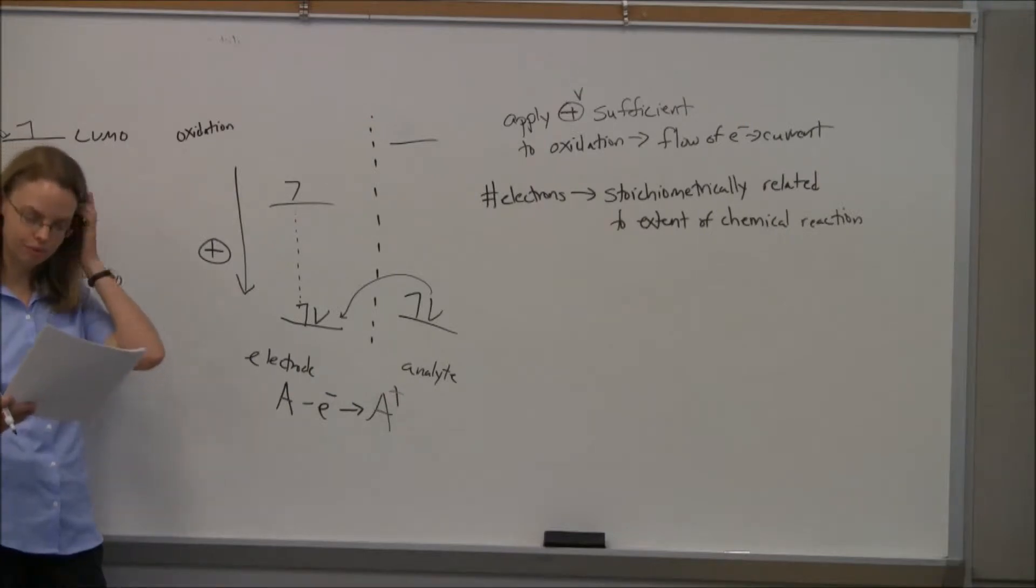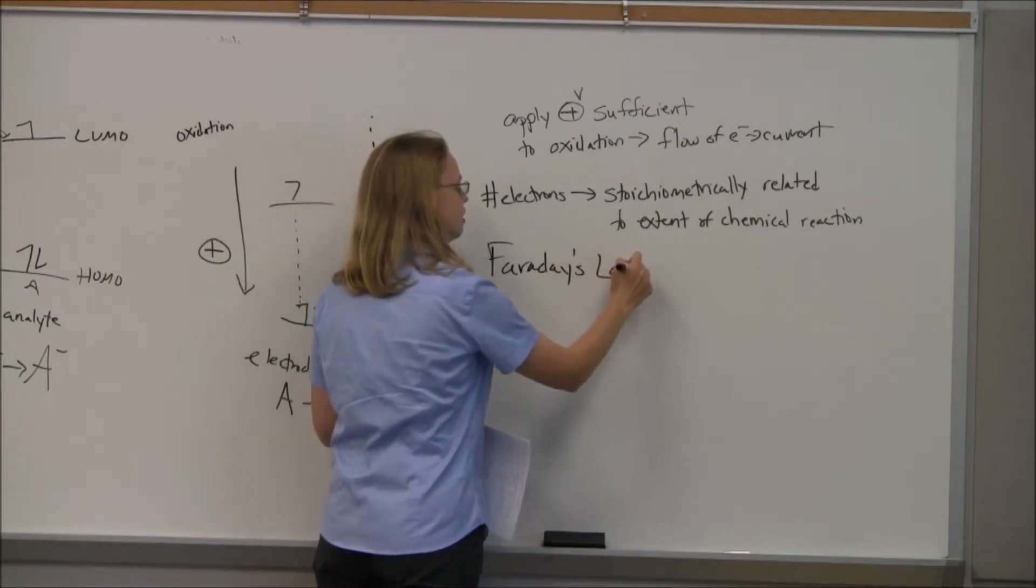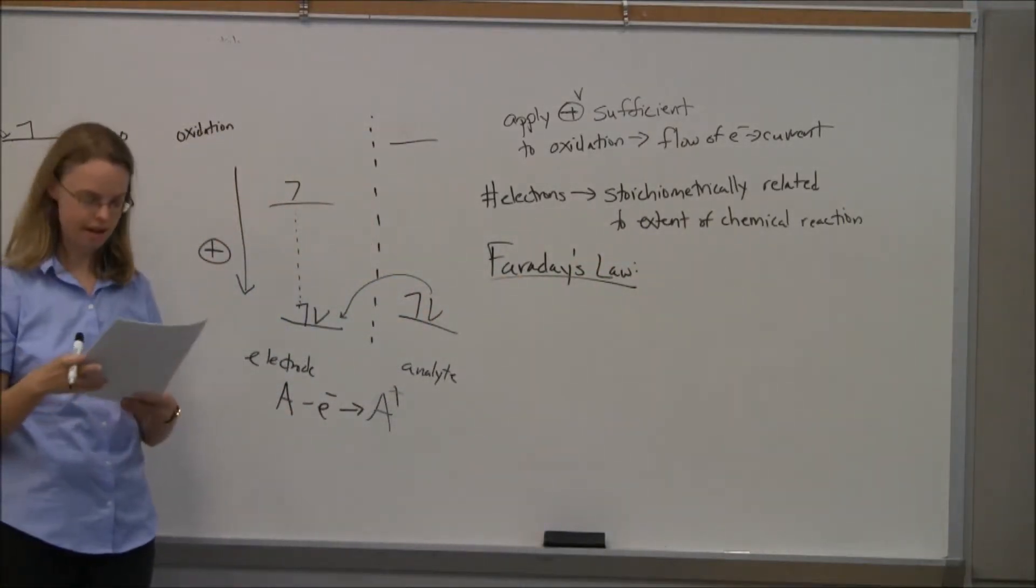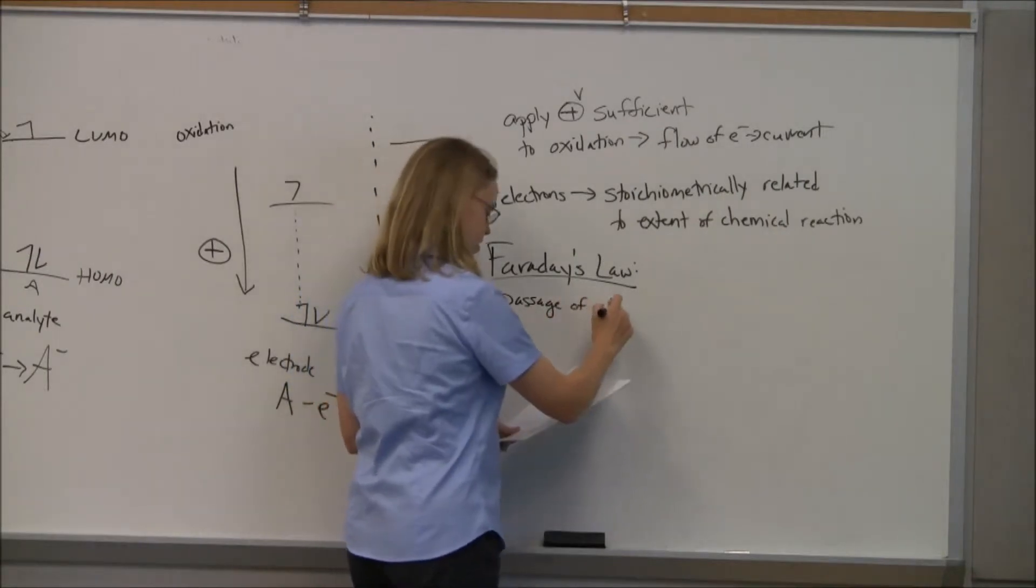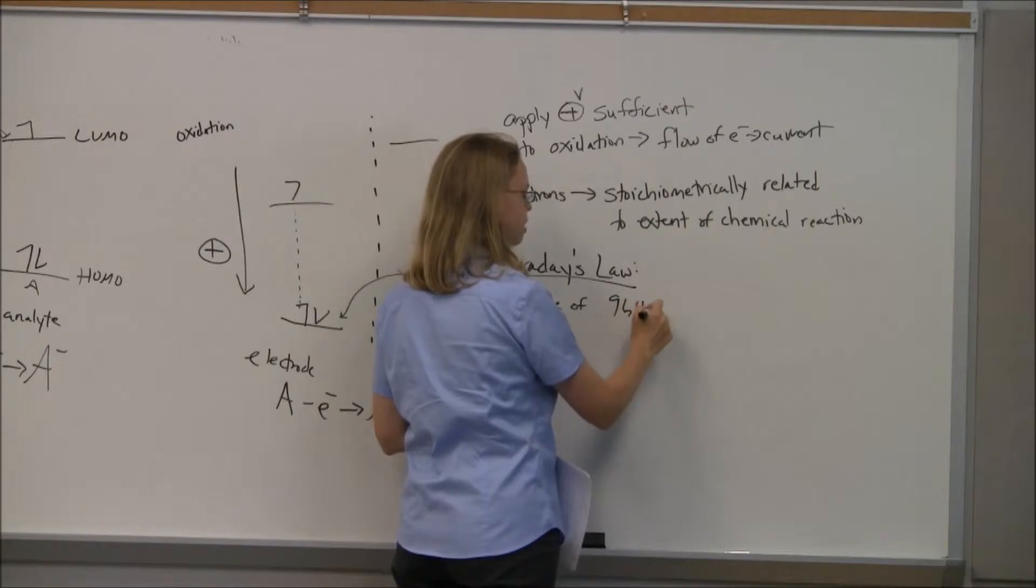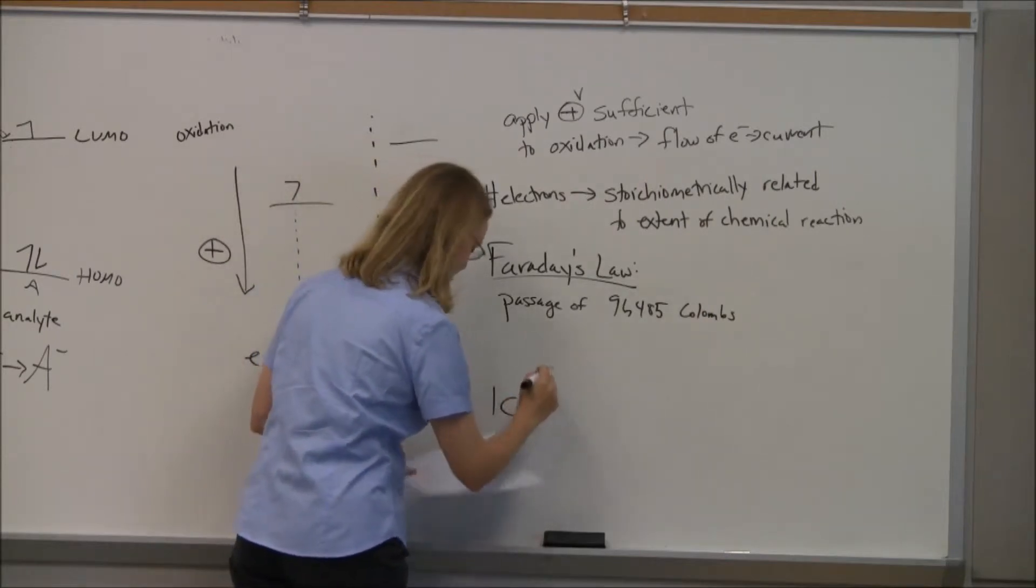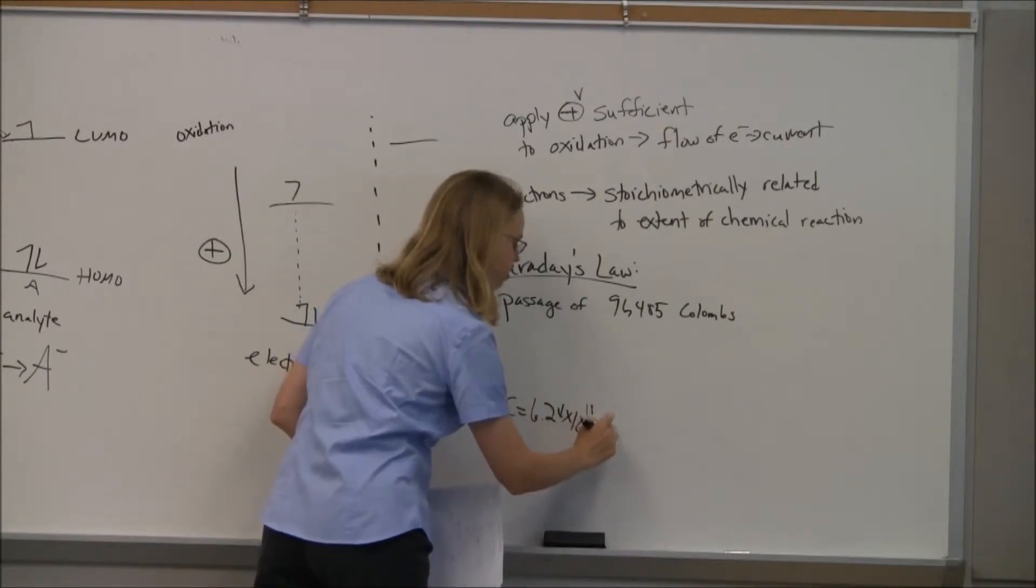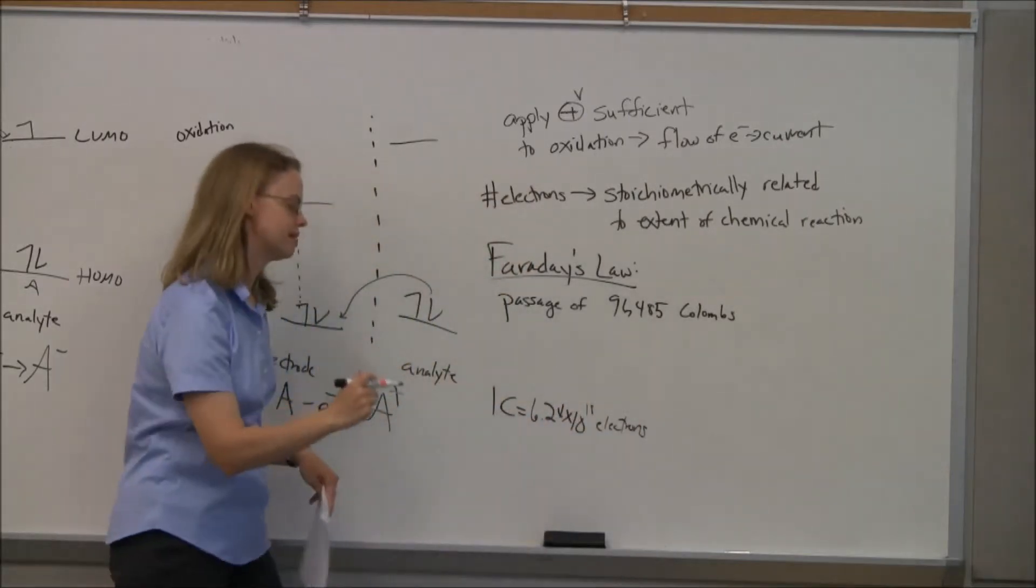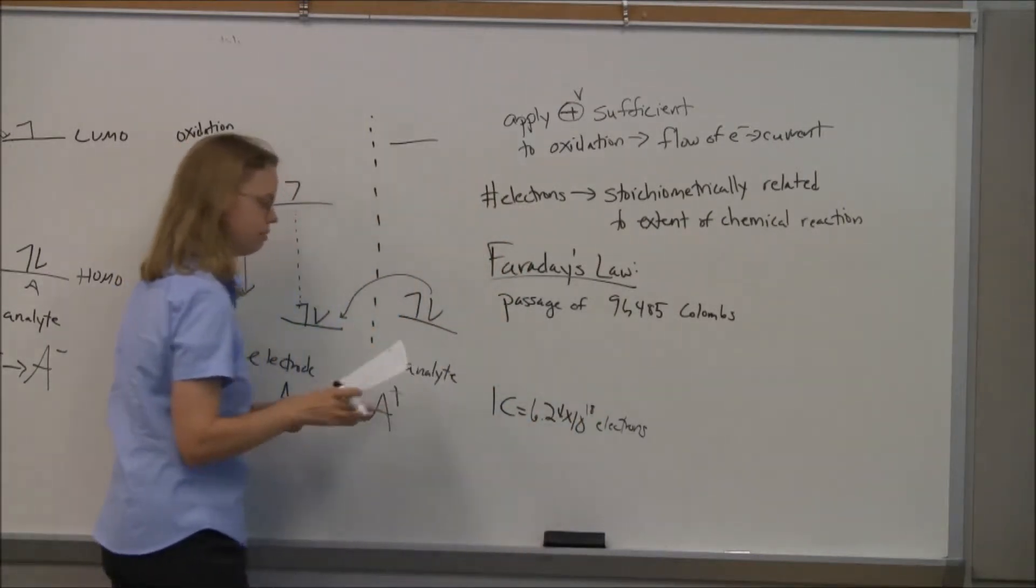The law basically, Faraday's law, says that you get the passage of 96,485 coulombs of charge. So coulombs, one coulomb, if I can read my notes, I think it's 6.24 times 10 to the 18 electrons. Don't memorize that number off my notes, but it's a fair amount of electrons.